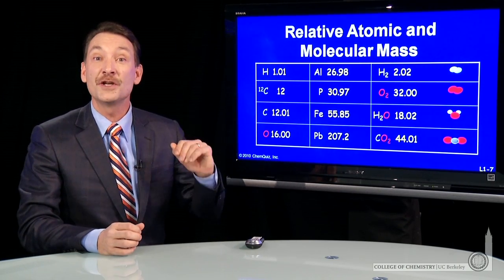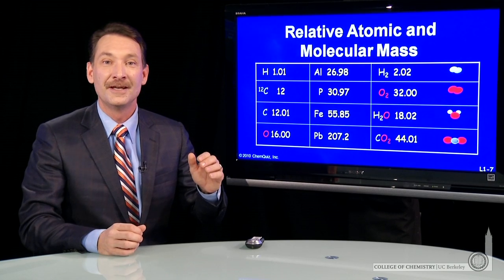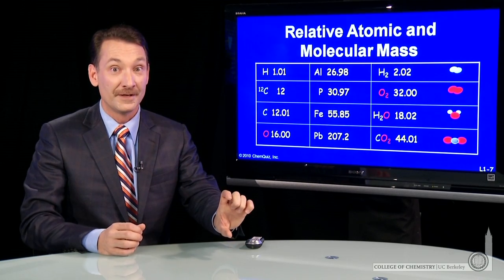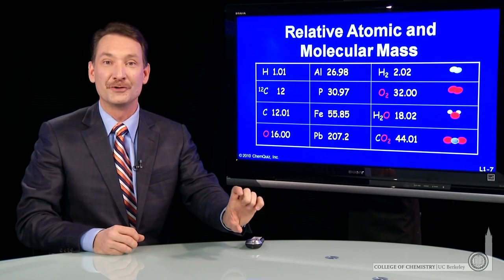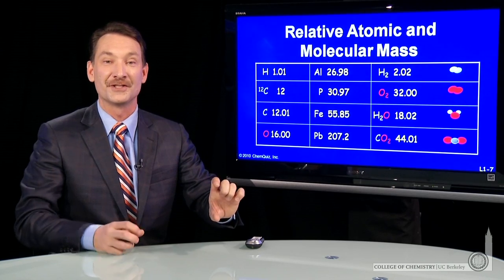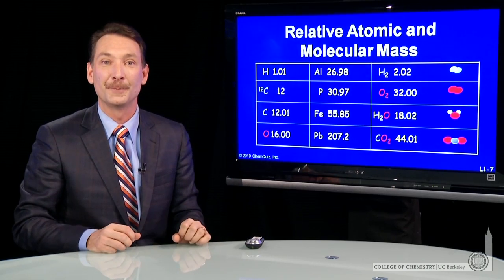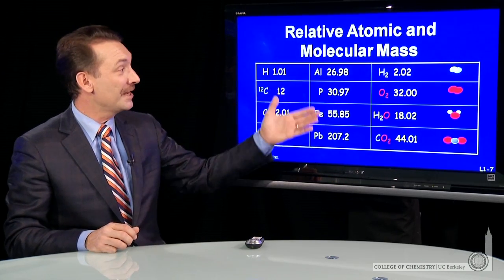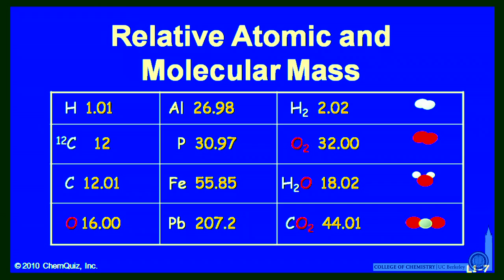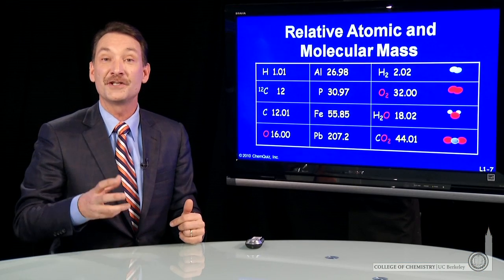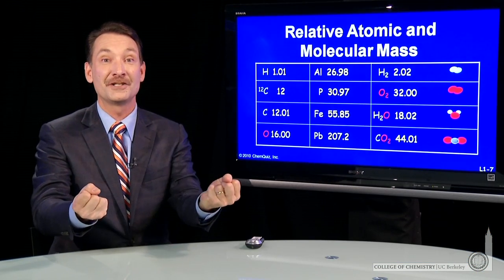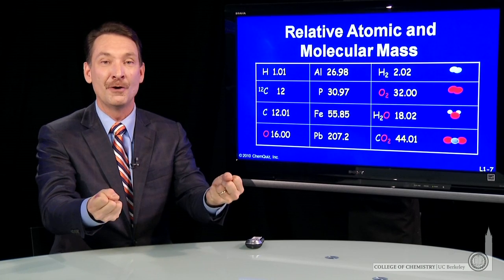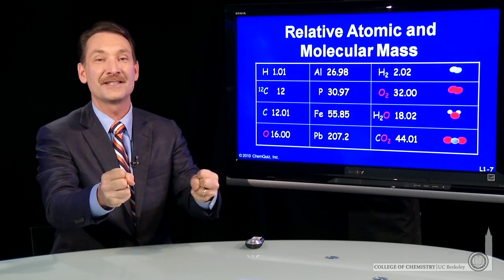Hydrogen is 1/12th as massive, so 1 gram of hydrogen has 6.02 times 10 to the 23rd particles — a 12 to 1 ratio. I've listed on this table a few other atoms and molecules and their relative masses. Here's oxygen, for example: it has 16 times the mass of hydrogen. So if I wanted to react oxygen and hydrogen atoms in a 1 to 1 ratio, I should keep the mass ratio 16 to 1.